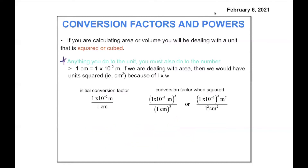Anything you do to the unit, you must also do to the number. So if our initial conversion factor is 1 times 10 to the negative second meters is to 1 centimeter, and if in our calculation we need to square the entire conversion factor, we would take 1 times 10 to the negative second and square that, and then we have to square our meters as well. We also have to square 1 and square centimeters.